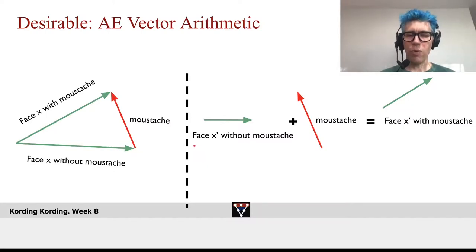And now, you can say, therefore, what would we like to have? We would like to have meaningful vector arithmetic, where we can say face X without mustache. Beautiful. Like, just face. Then, we add that mustache component, and then we get the face with a mustache.